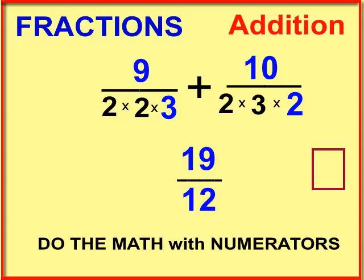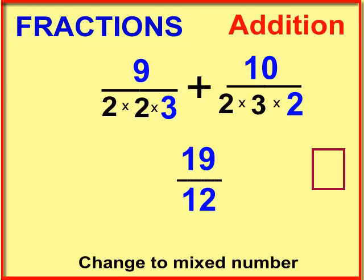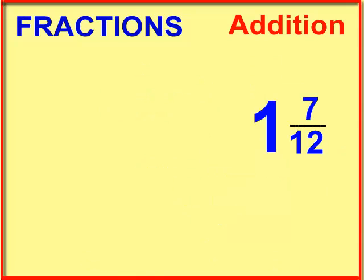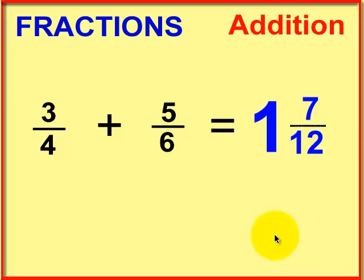Then we simply do the math on top of the fraction. That comes out to nineteen over twelve. If you have to change it back into a mixed number, you simply divide the numerator by the denominator, just regular old long division. How many times does twelve go into one? None. How many times does twelve go into nineteen? One. I multiply it and subtract it, and I get seven. Since this remainder is smaller than the divisor, I just write it up like that.